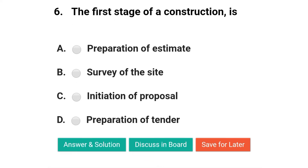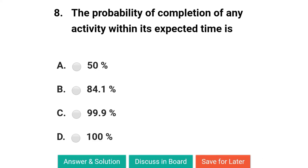Next question: the first stage of construction is — option A: preparation of estimate; option B: survey of site; option C: initiation of proposal; option D: preparation of tender. The correct answer is option C: initiation of proposal.